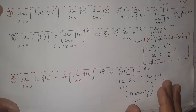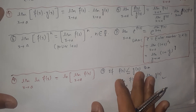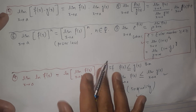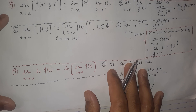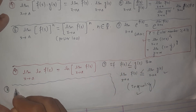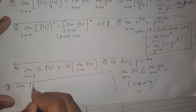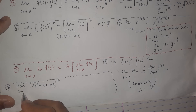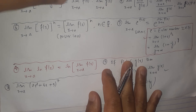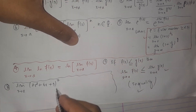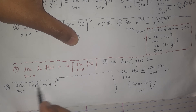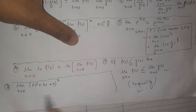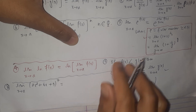We have studied nine important properties of the limit of a function at a given point. Now let's solve a problem related to these properties. The example is: evaluate the limit of (2x² + 6x + 9) to the power 7 when X approaches to 2.